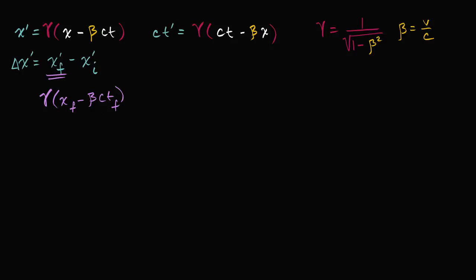And from that, I'm going to subtract the initial x prime. X prime initial is just going to be the Lorentz factor gamma times x initial minus beta times ct initial. So now we can factor out the gamma.